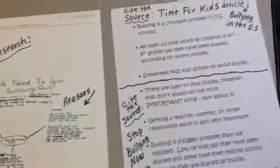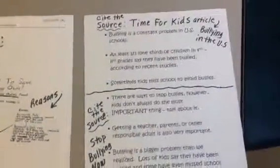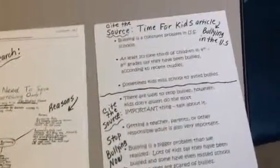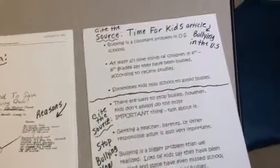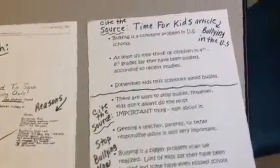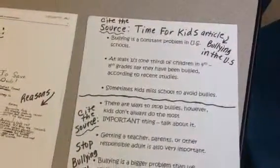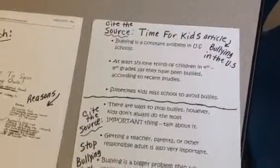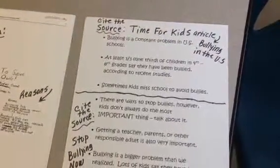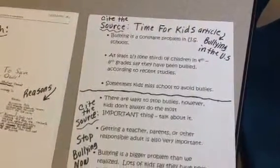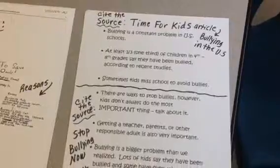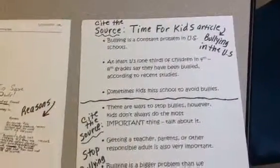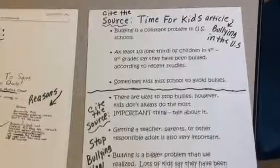We also talked about that we have to cite our sources — can you imagine in third grade learning to do that? This group was doing an opinion piece on bullying. In the article 'Bullying in the U.S.' from Time for Kids, they found those top three bullets — that was information they got, so we're citing the source.